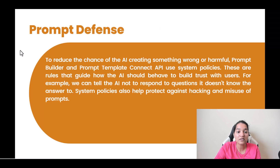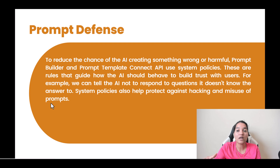This means: to reduce the chance of the AI creating something wrong or harmful, prompt builder and prompt template connect API uses system policies. These are rules that guide how the AI should behave to build trust with the users. For example, we can tell the AI not to respond to questions it doesn't know the answer to. System policies also help protect against hacking and misuse of prompts. So basically, prompt defense means you're adding extra instructions to your prompt to avoid any prompt injection — which is when a user adds text that changes the meaning of the prompt and gives you an undesirable result.